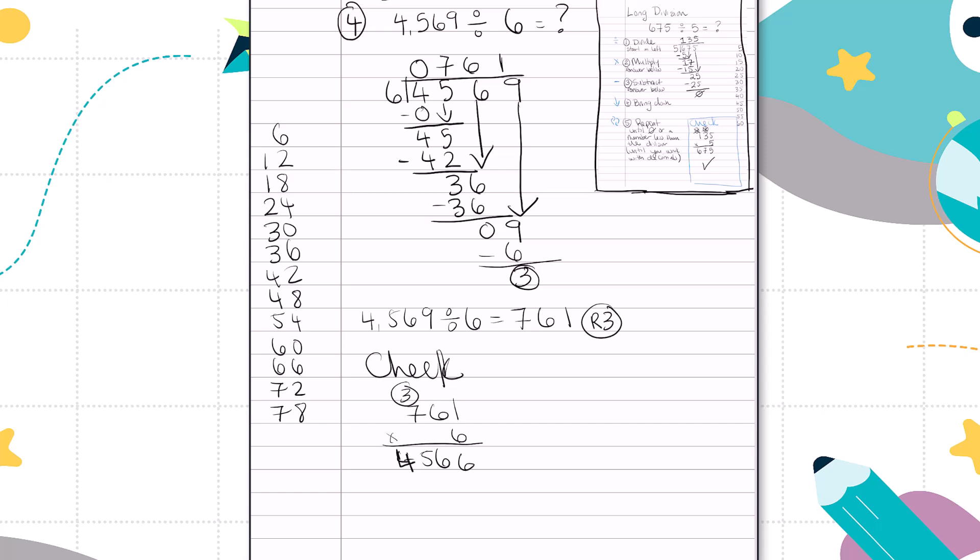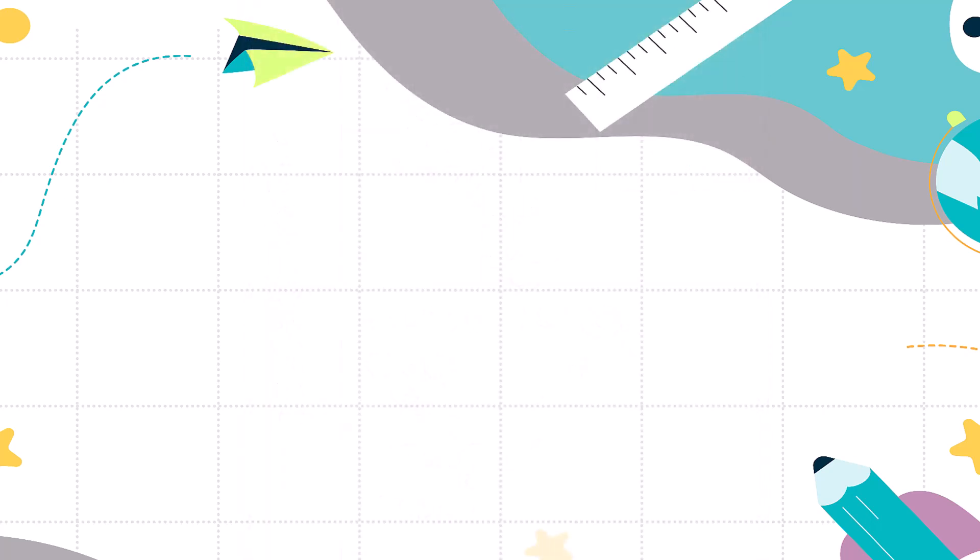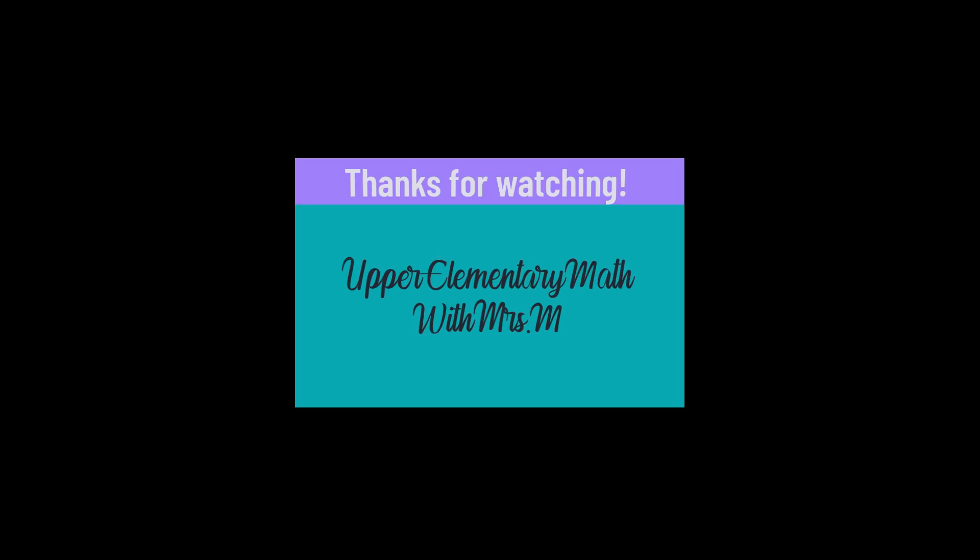There we go. Now that's not quite our dividend, because remember, we have a remainder. So I need to add that remainder on. 4569. And now that does give us our dividend, 4569. Stay tuned for another practice video with double digit divisors.